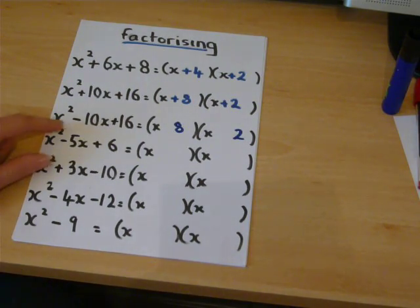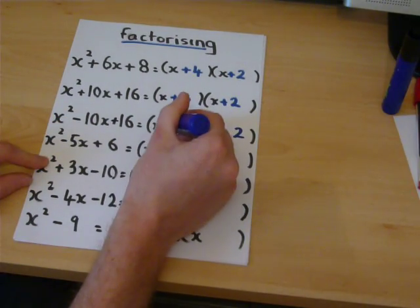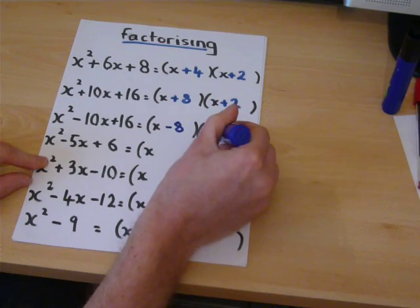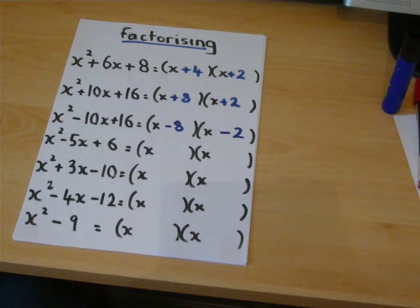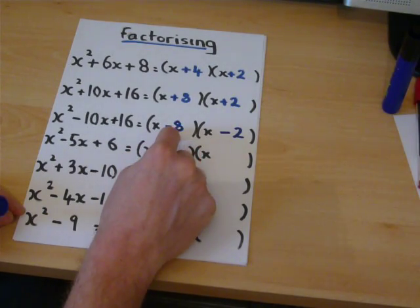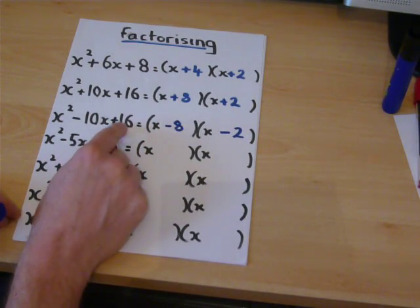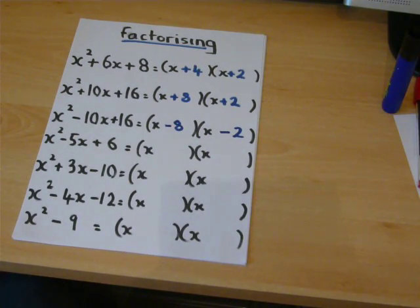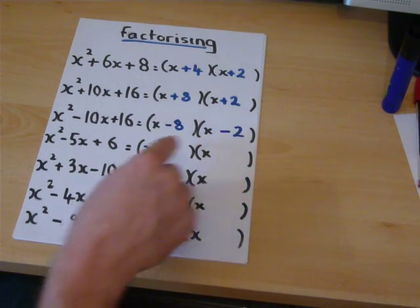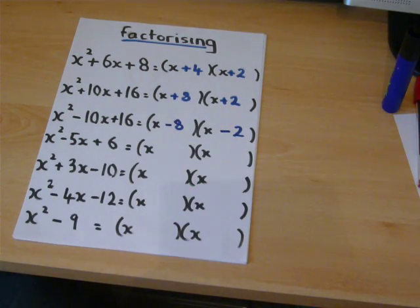But to get a minus ten, we need a minus eight and a minus two. Now, this still works because minus eight times minus two is still plus sixteen, because when you multiply, the two negatives cancel out and give you a plus sixteen.